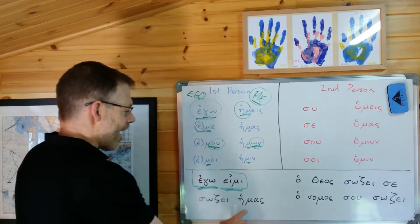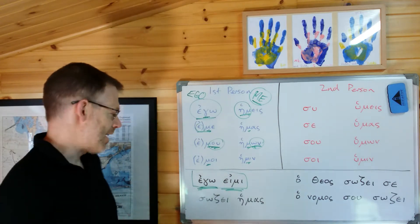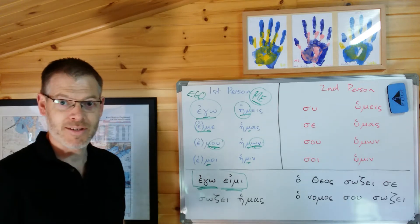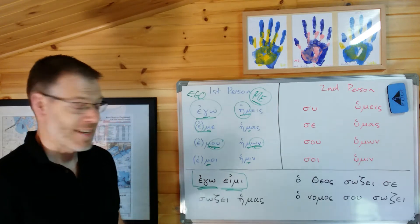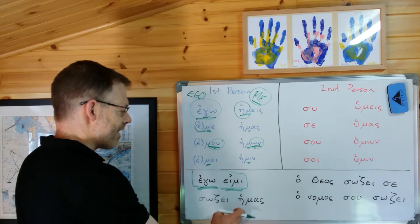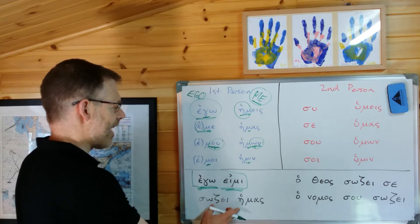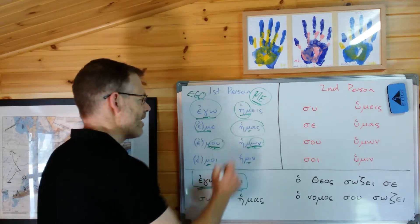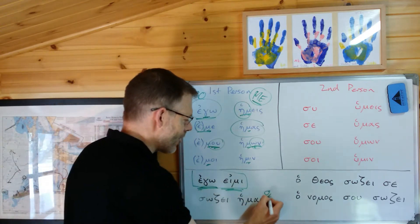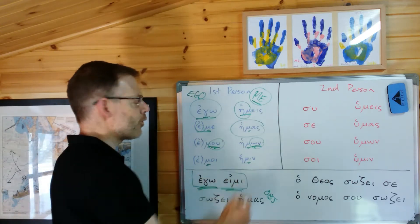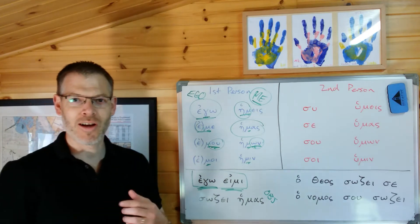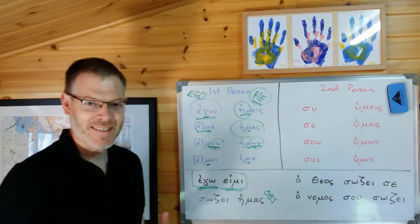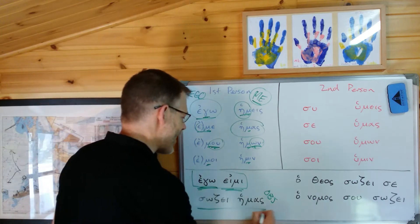Let me show you an example. Sōzei hēmas - sōzei from sōzō, meaning I save. This is the third person singular, present indicative active: he saves. Hēmas is the accusative, so this is the object, and it's plural. So the plural of me, when it's the object, is us. He saves us. You get to see how the first person pronoun is used.